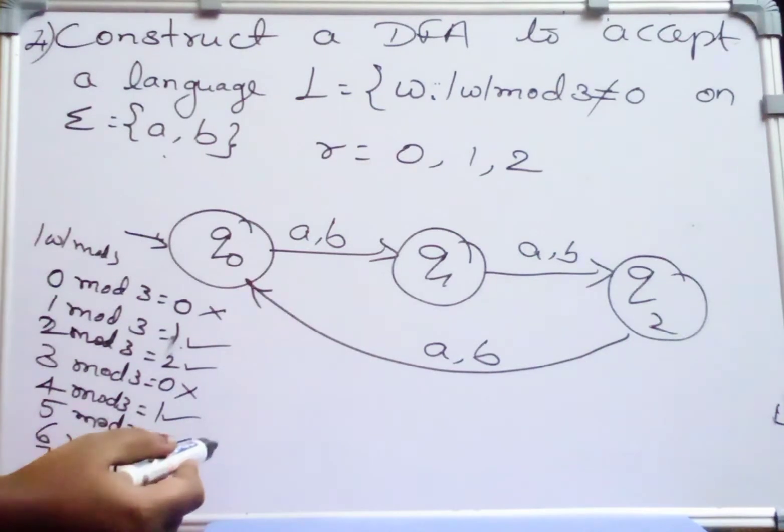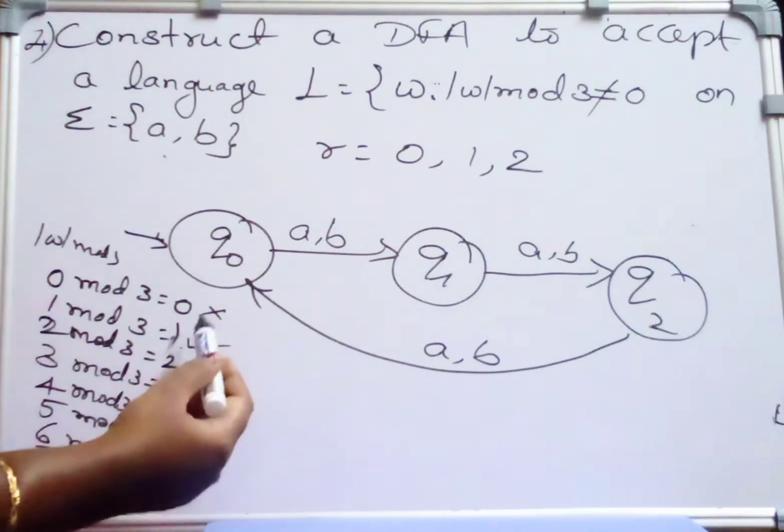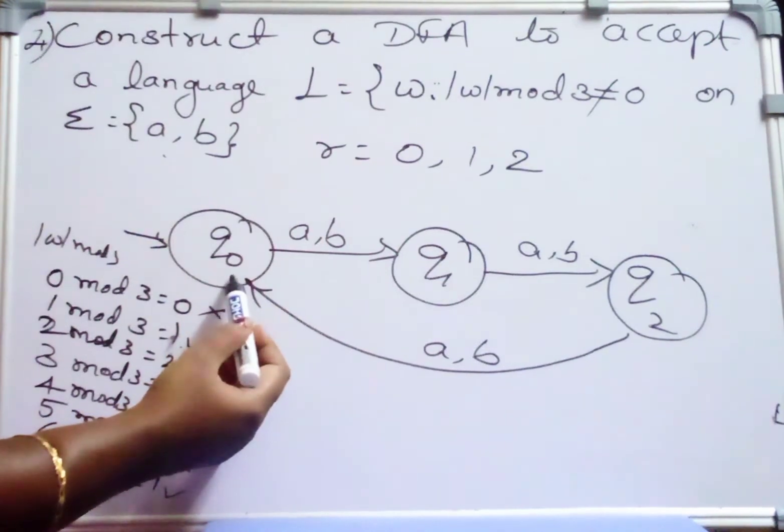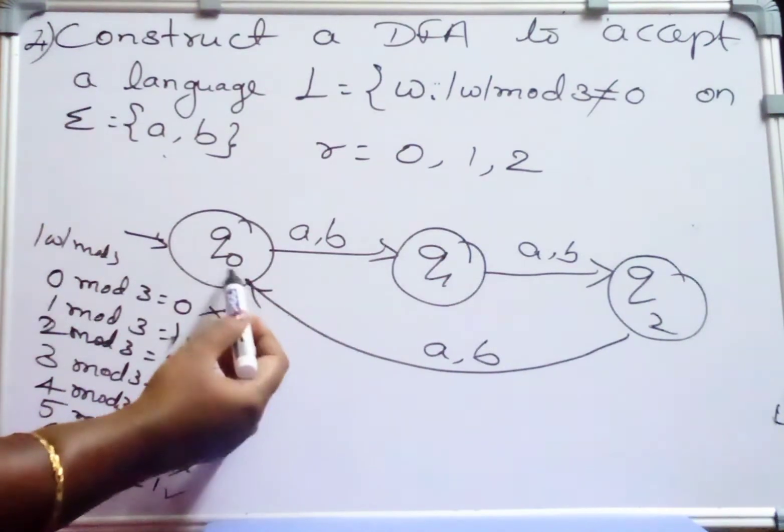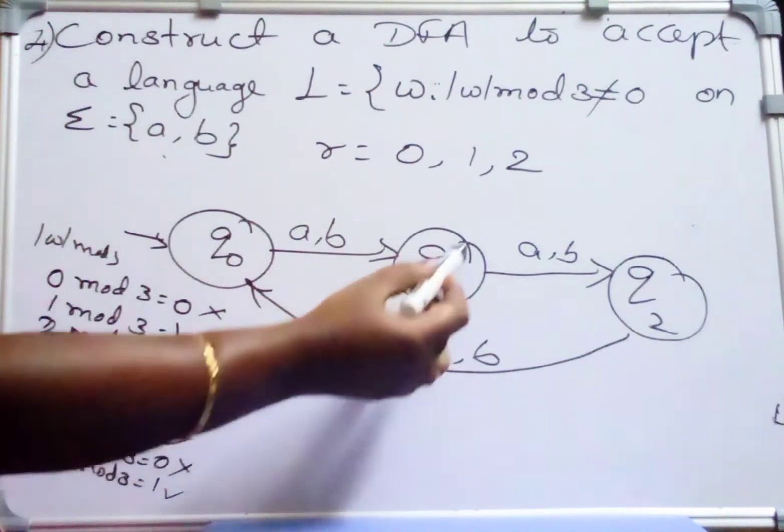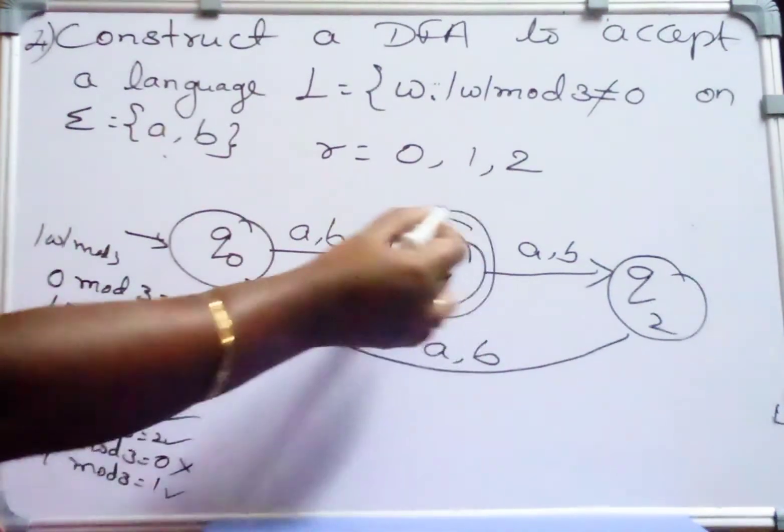Now which should be our final state now? So here 0 mod 3 is in this state Q0, the remainder is 0. Blind method, so this will not be our final state. If it is 1 mod 3, if my input is 1 mod 3, the string has to be accepted.